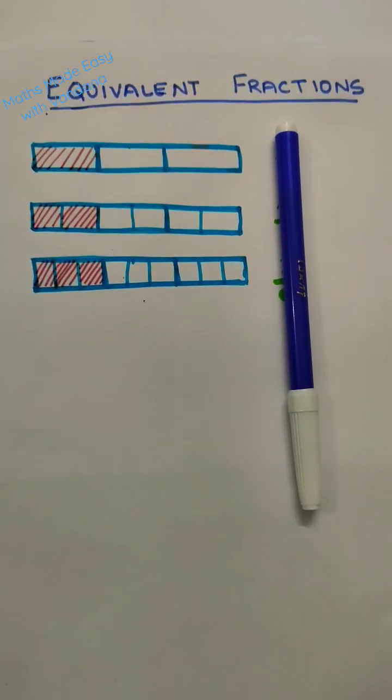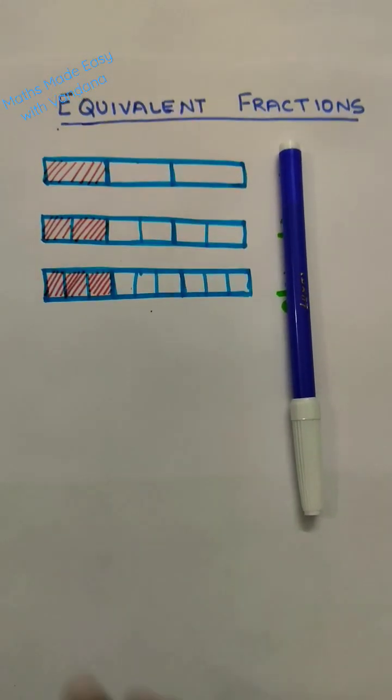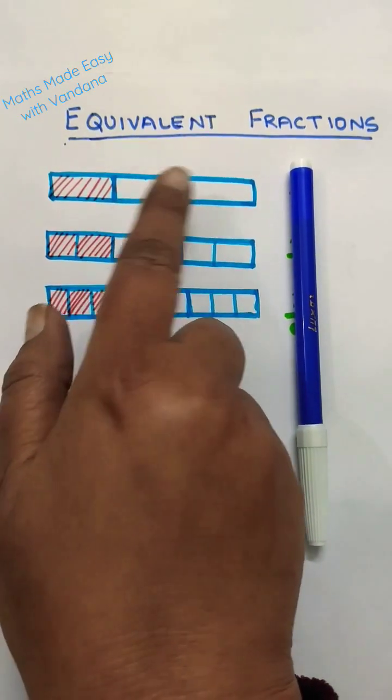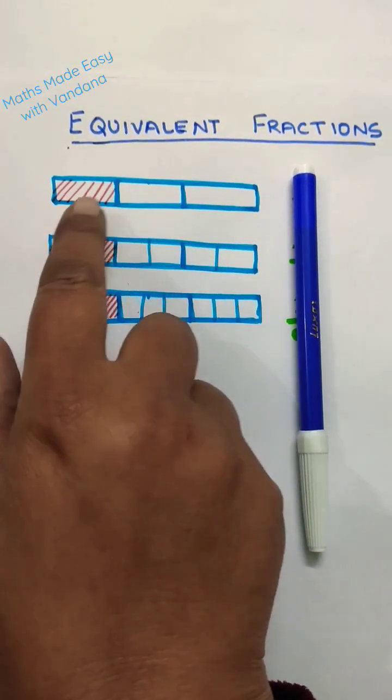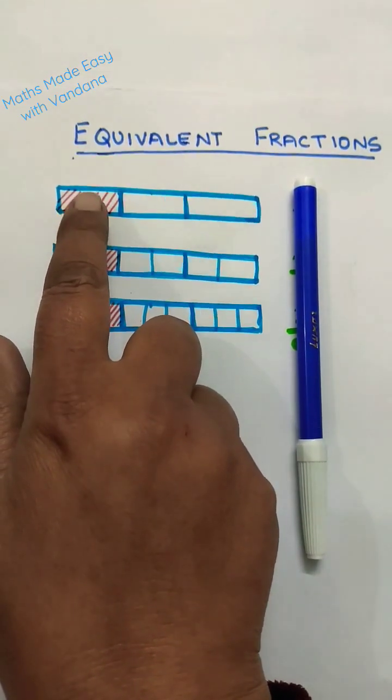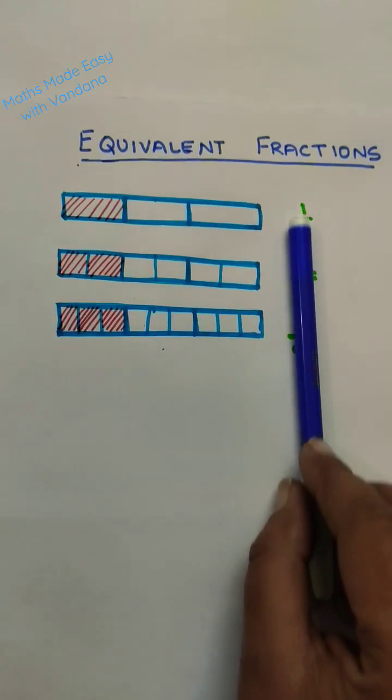What are equivalent fractions? Let's study with an example. I've taken one strip and divided it into three equal parts and shaded one part. So the fraction for the shaded part becomes one by three.